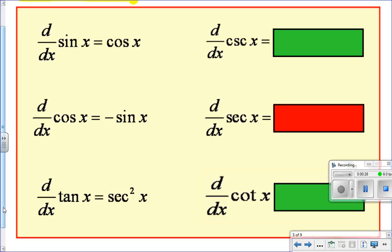Secant squared. What about cosecant? Negative cosecant times cotangent. That's a rough one. No, they don't give you these.